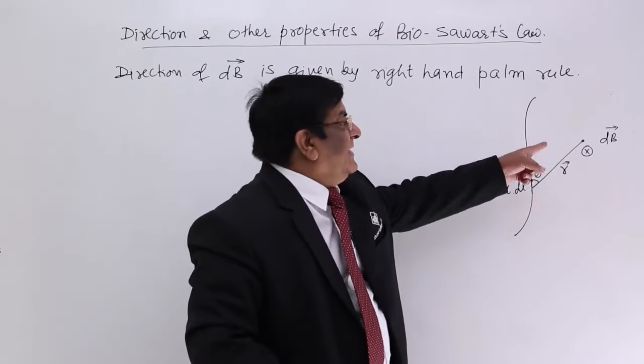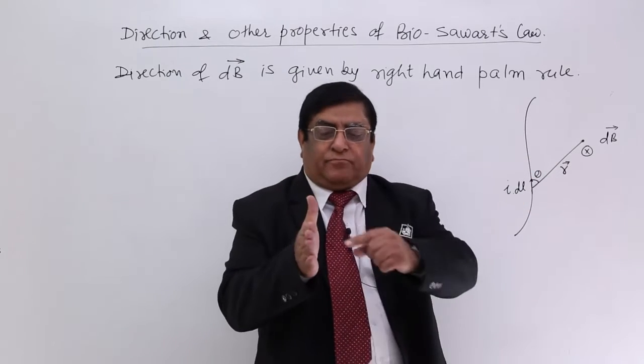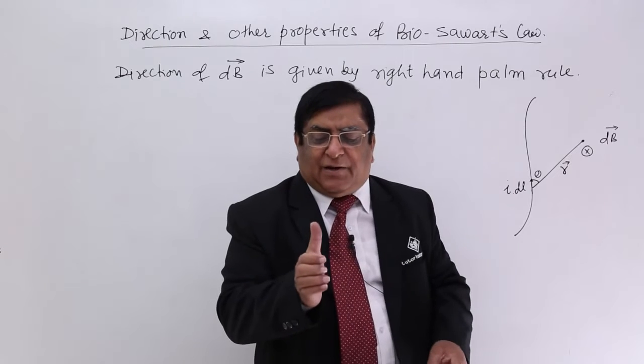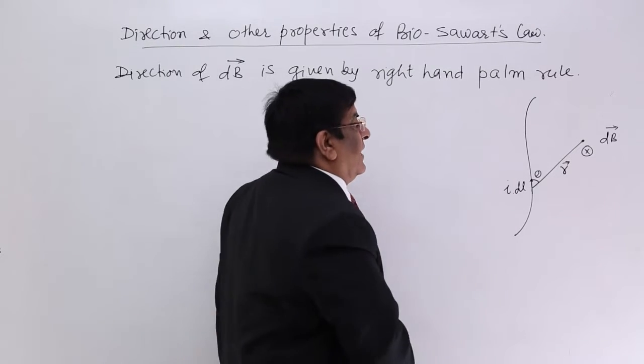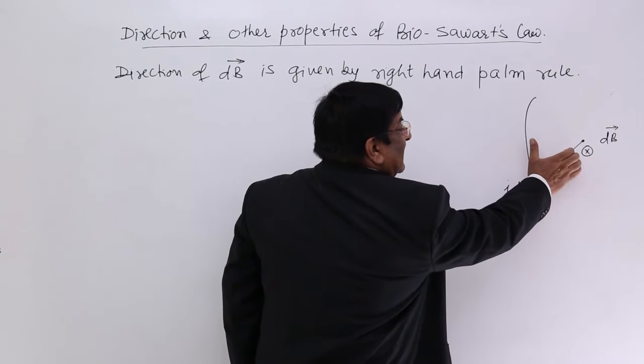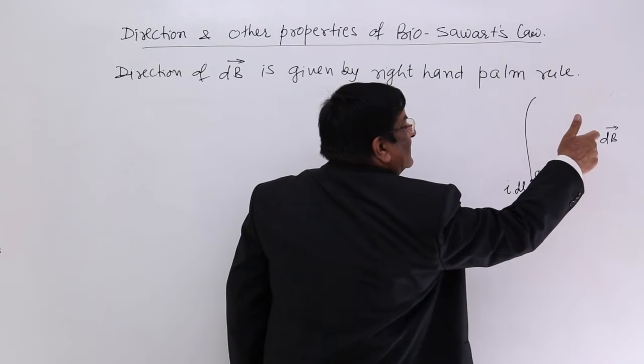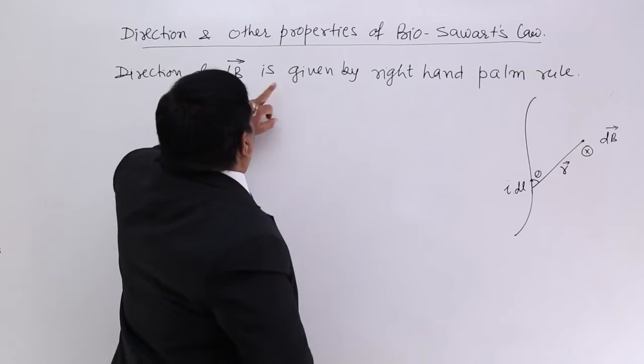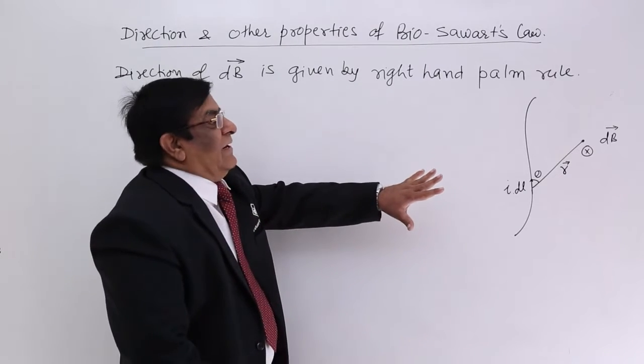So this is magnetic field going inside here. Now I made a shortcut for this. We have to make a right angle here. This I turn this way. It becomes a right angle to the palm. So I simply place it here and turn. This is inside is the direction of magnetic field. This is about the direction given by the right hand palm.